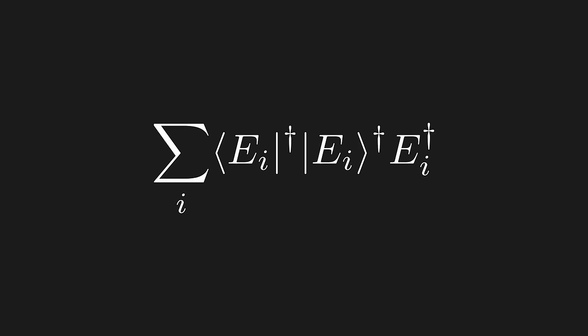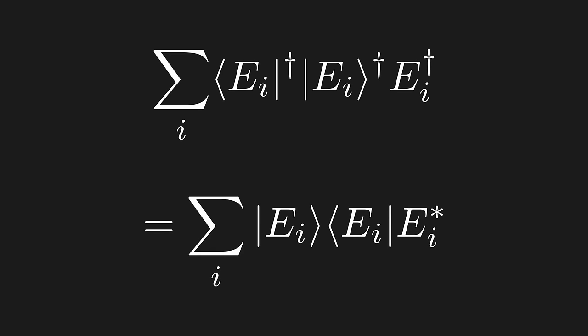The Hermitian adjoint of a bra is a ket, the adjoint of a ket is a bra, and the adjoint of a scalar is the complex conjugate.